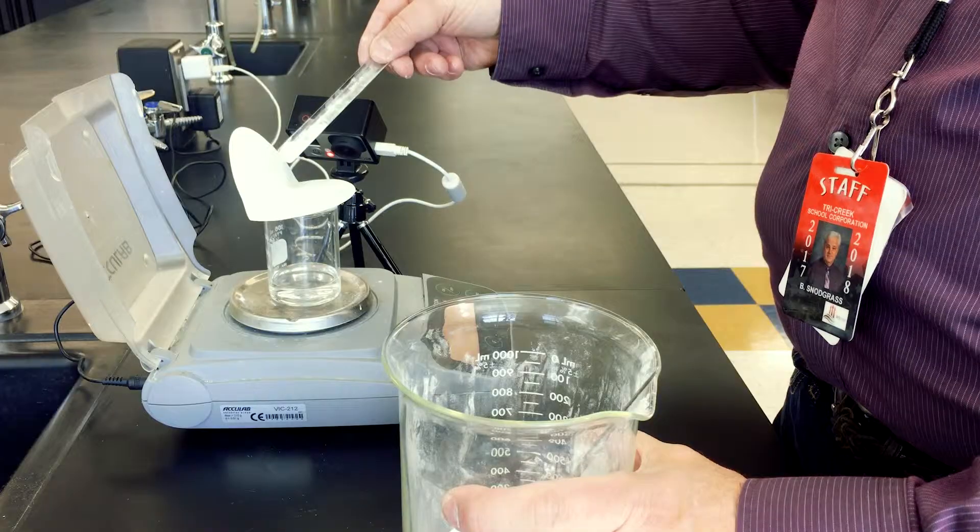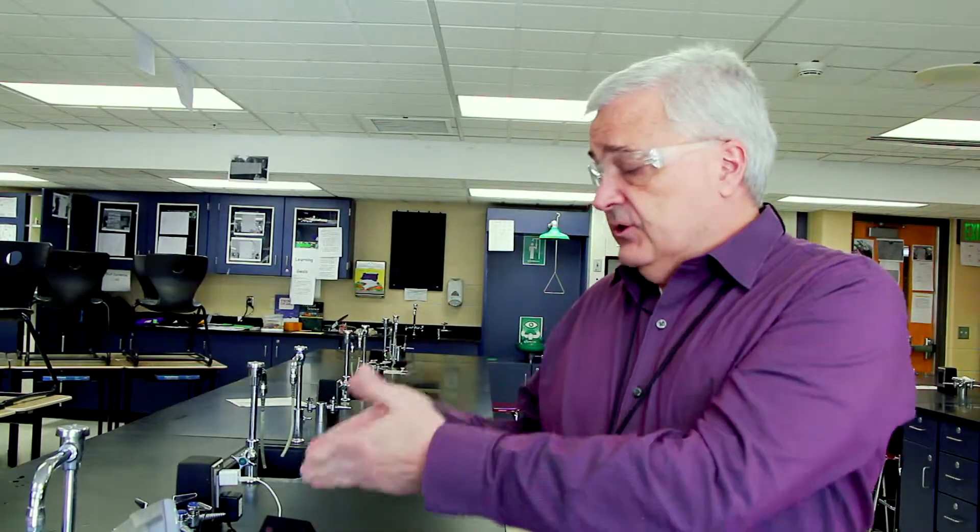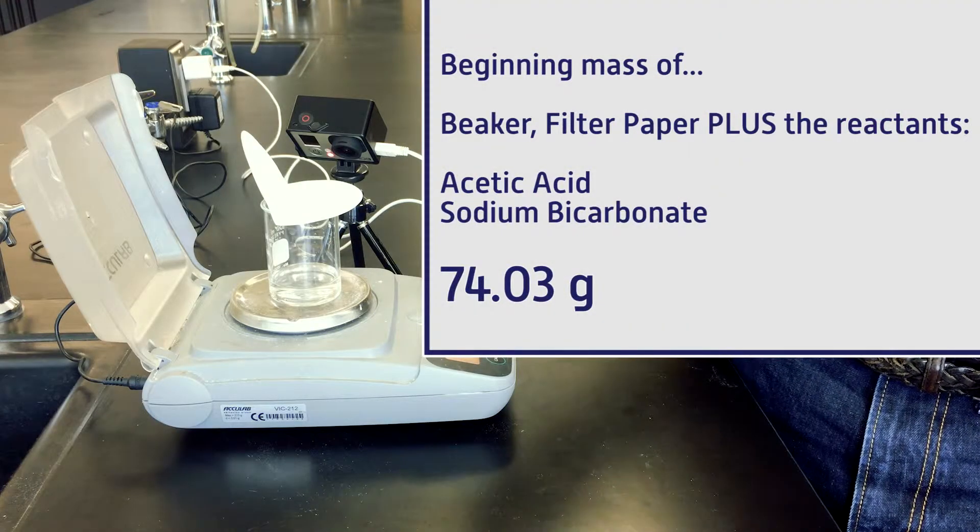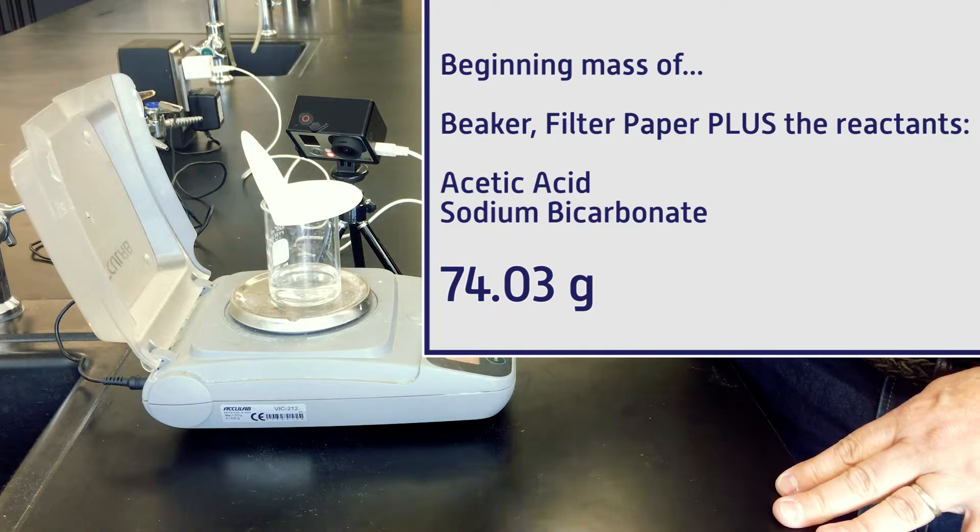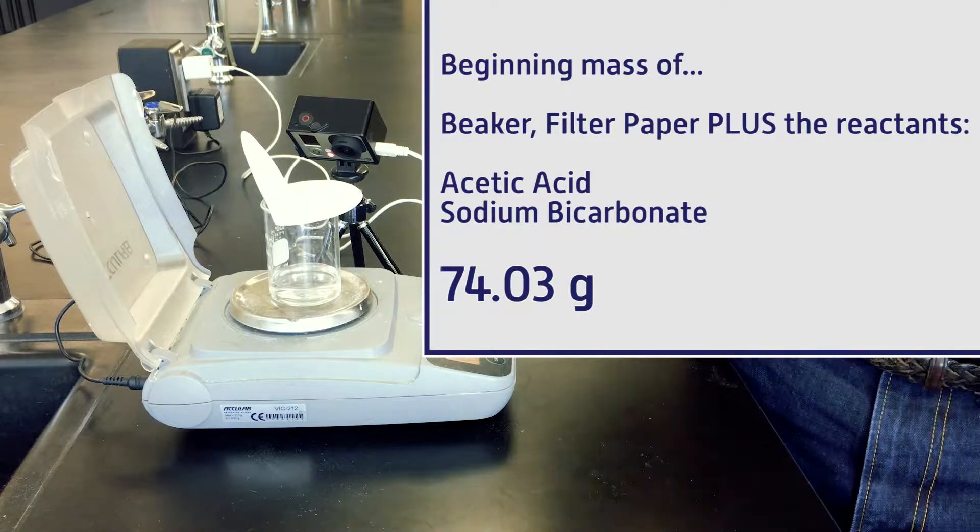Taking into account the mass of the beaker, the amount of the acetic acid, and the mass of the filter paper, the beginning mass of all of the reactants—the sodium bicarbonate and the acetic acid, plus the filter paper in the beaker—is 74.03 grams. So 74.03 grams is our starting mass.